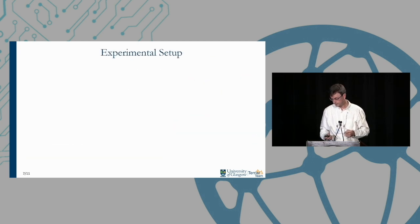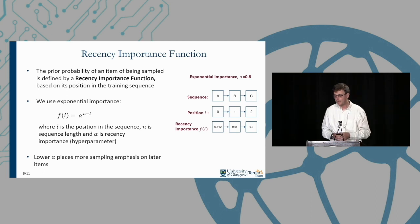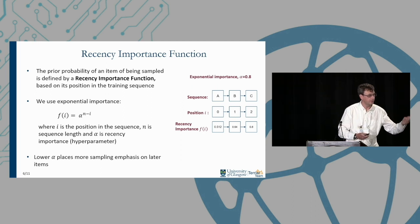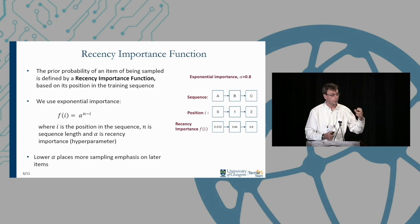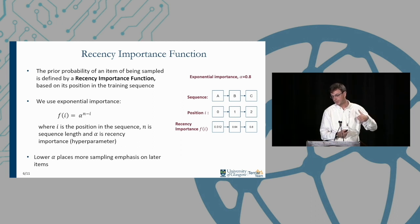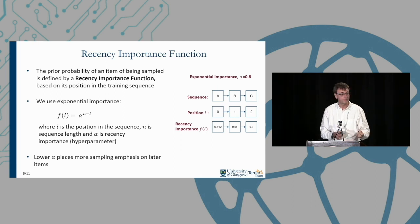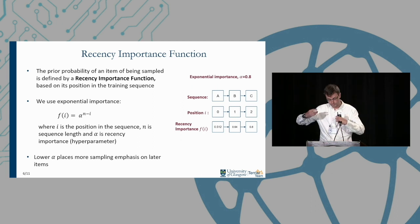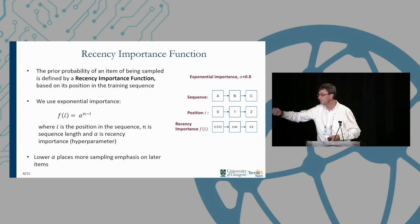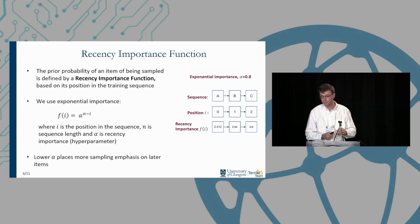To define this prior, we devised a recency importance function that assigns a weight to an item given its position in the sequence. In this paper we use an exponential recency importance function based on alpha — a hyperparameter — raised to the power of (n − i), where n is the sequence length and i is the position. Items later in the sequence are more likely to be sampled as positives, and the hyperparameter controls how much emphasis is placed on later items.